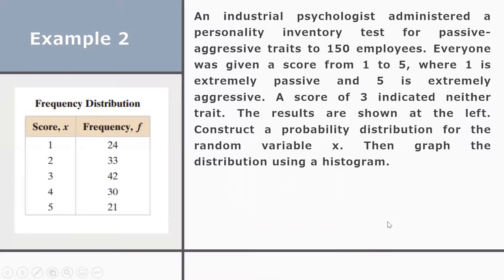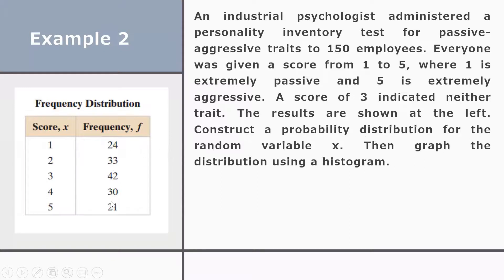Example 2: An industrial psychologist administered a personality inventory test for passive-aggressive traits in 150 employees. Everyone was given a score from 1 to 5, where 1 is extremely passive and 5 is extremely aggressive, and a score of 3 indicates neutral traits. The results show frequencies: 24 employees scored 1, 33 scored 2, 42 scored 3, 30 scored 4, and 21 scored 5. We will construct a probability distribution and histogram. Each frequency is divided by the total of 150 employees.